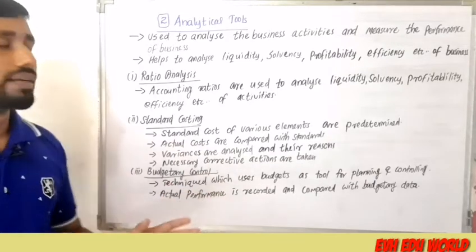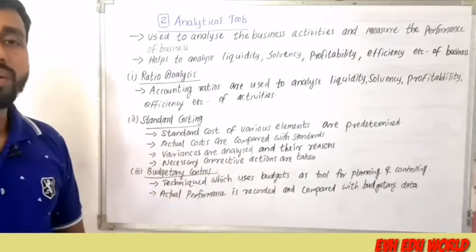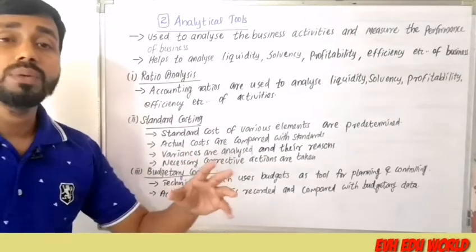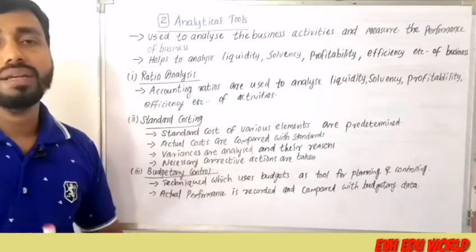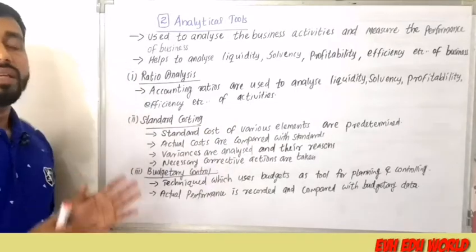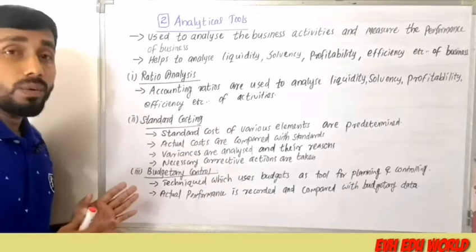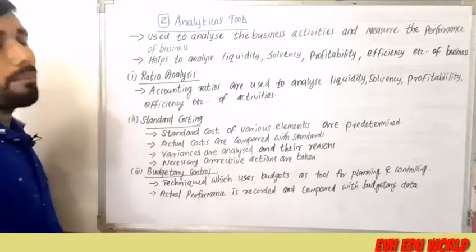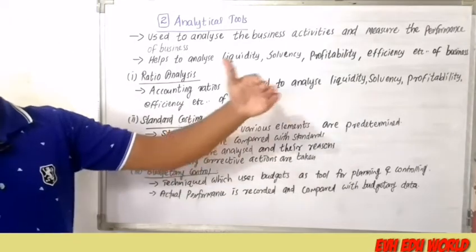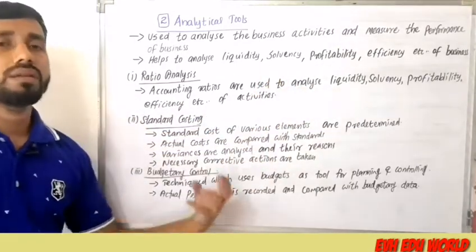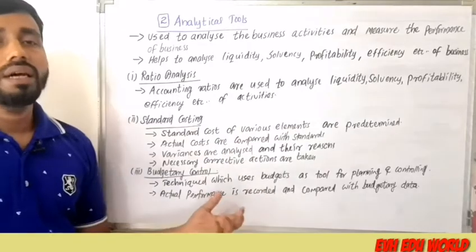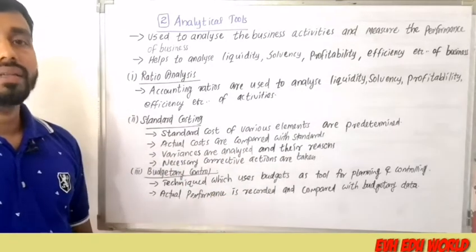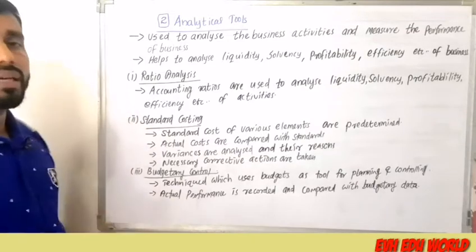After finding the variances, we determine the reasons for those variances and take corrective action. This process is standard costing. Budgetary control uses budgets for planning and controlling an organization — actual performance is compared to budgetary data to identify deviations and make correct decisions.